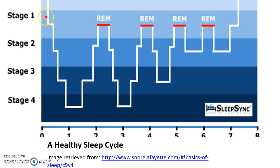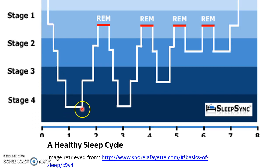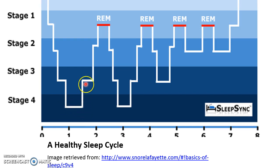After you go through stages one through four, it takes about 30 minutes to get from stage one to stage four, and you only stay in stage four for about 30 minutes. Mother Nature finishes the job pretty quickly, and then you go back up through the stages — stage three, stage two — to your first REM cycle.